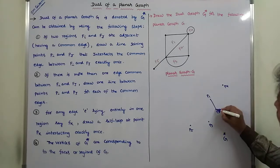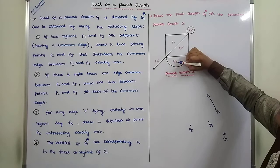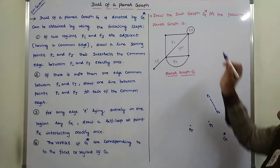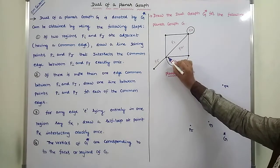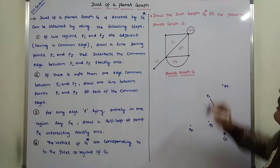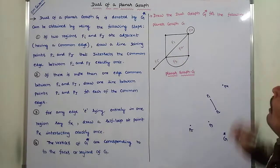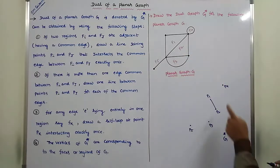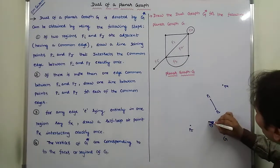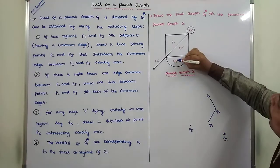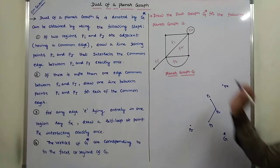F2 region and F3 region are adjacent because they are separated by a common edge. We have to draw the edge between F2's corresponding point P2 and F3's corresponding point P3, such that the edge P2-P3 intersects the common edge between F2 and F3.